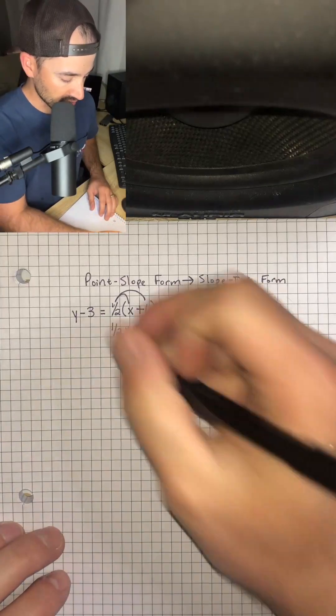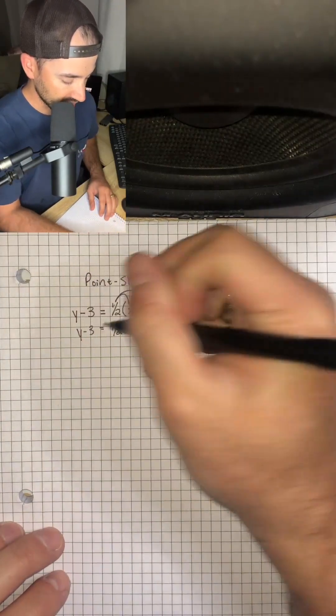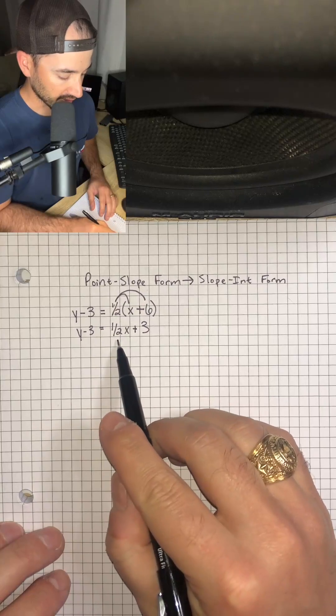Then we're going to bring down the rest of our equation. So y minus 3 is equal to 1 half x plus 3.